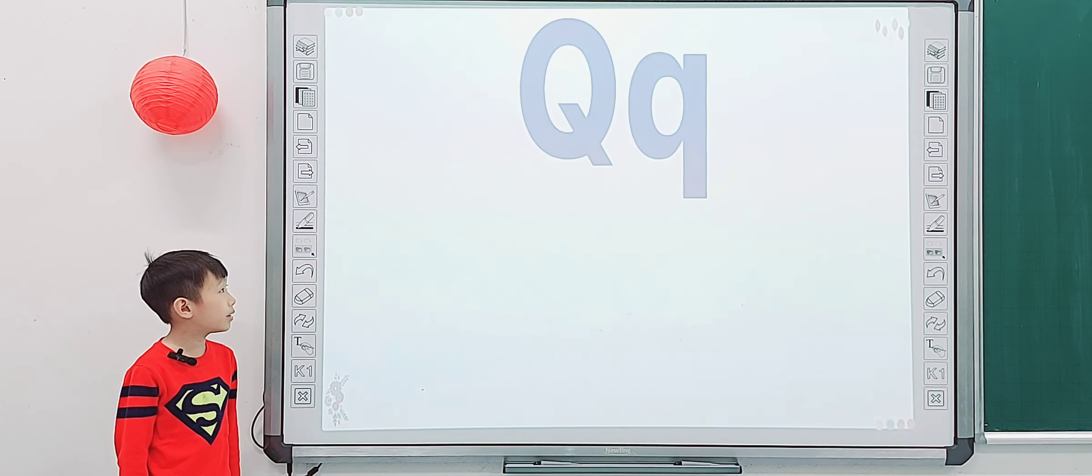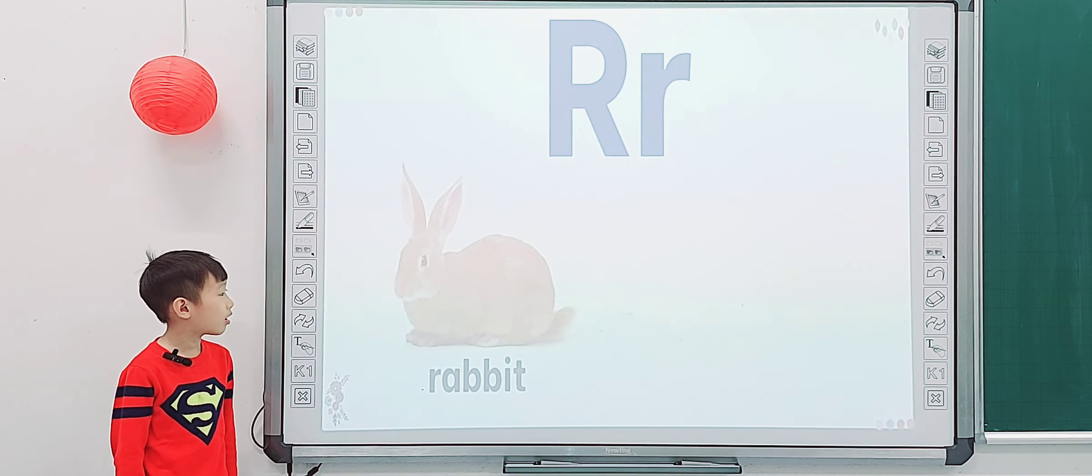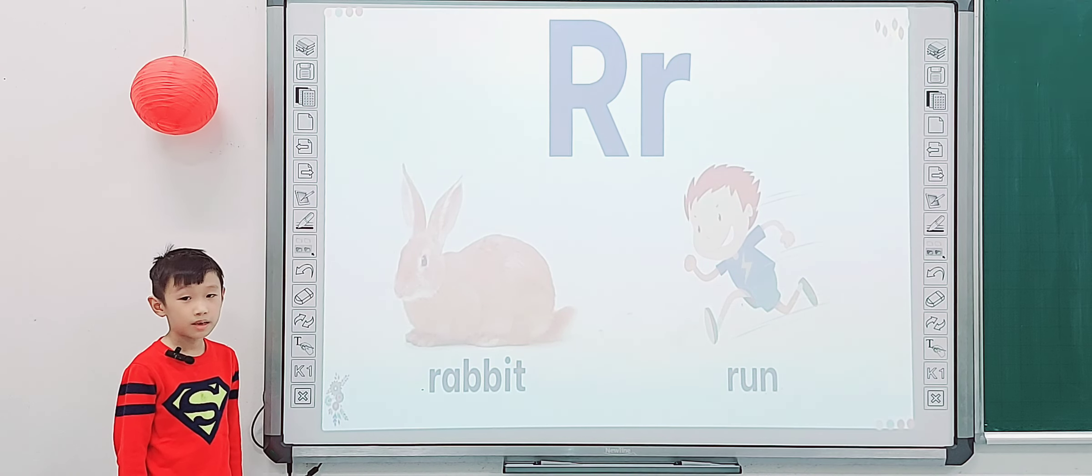Next one, what is it? Peel. Queen. Crouches. Yeah, nice one. R. Rabbit. Run. Rabbit. Rabbit.